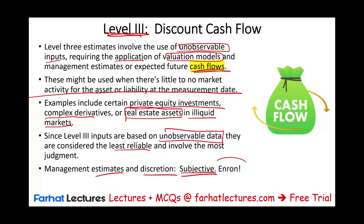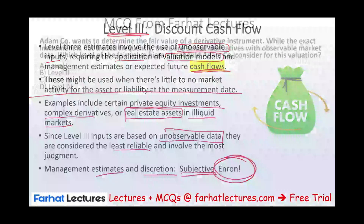This is what Enron used to do — arbitrarily assigning fair market value to assets and booking profit from fictitious values. Level three requires you to explain why an asset is worth a certain amount, since there's no direct quote and no observable similar data. You're using discounted cash flow and must disclose all assumptions.